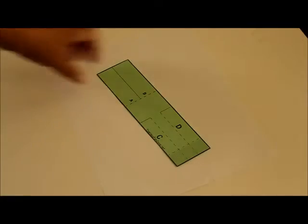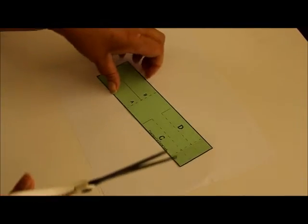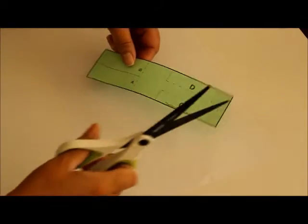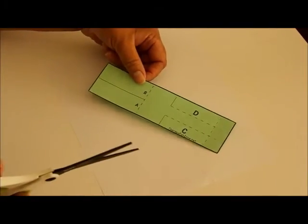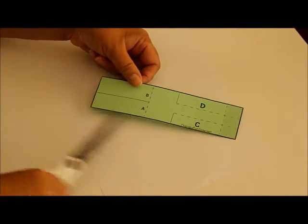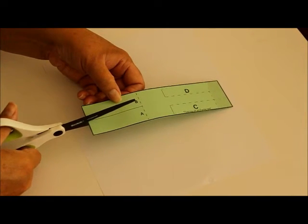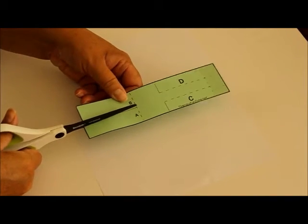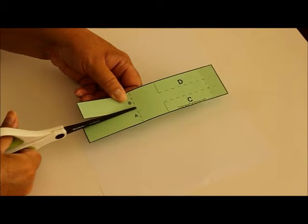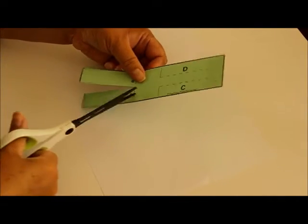We're making a paper helicopter. Cut out the template in the rectangle. Snip along the solid lines and fold along the dotted lines.